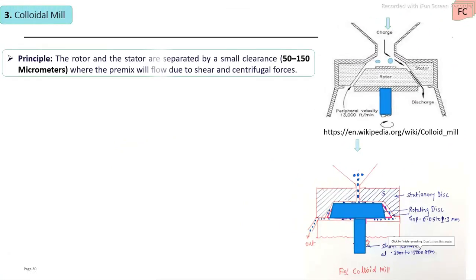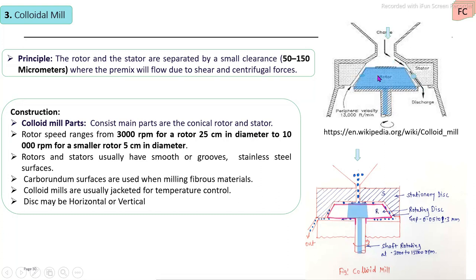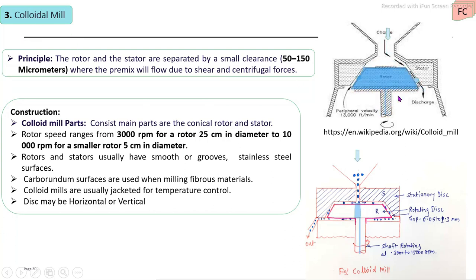The third example is the colloidal mill, used for homogenization of paste-like materials. It consists of a stationary disc and a rotating disc (rotor). The gap between the discs is very small. Material is loaded from a hopper into the center, and size reduction is achieved between the stationary and rotating discs. The discs may have a smooth or corrugated surface. The small clearance and high-speed rotation create shearing and attrition forces, carrying out both size reduction and mixing. Colloidal mills are mostly used for paste-like materials.